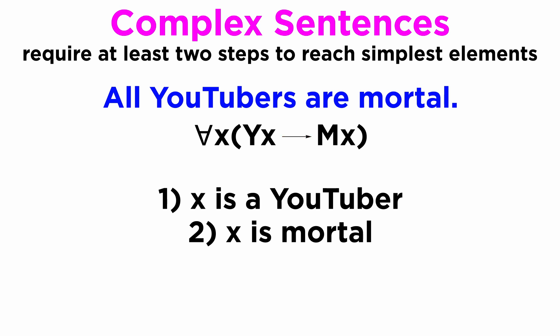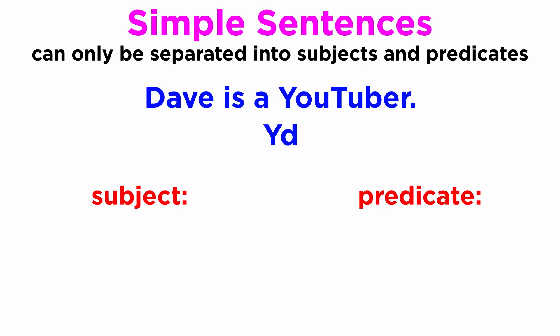But contrary to classical term logic, we can analyze the same sentence in multiple ways. Returning to Dave is a YouTuber, there are three manners in which we can understand it. First, as we saw just now, Dave as a subject, and () is a YouTuber as a predicate.